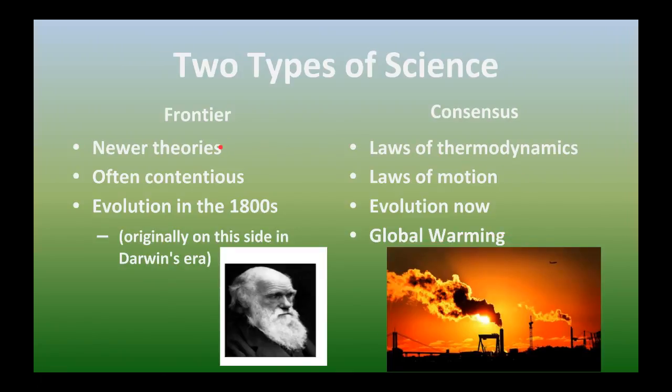So know your two types of science. Again, frontier is more than new age stuff. Consensus is what's been around. And those, that scientific method, those experiments keep going back to the same conclusion.